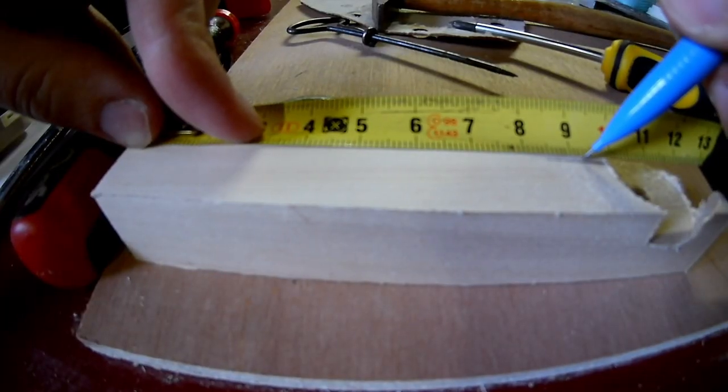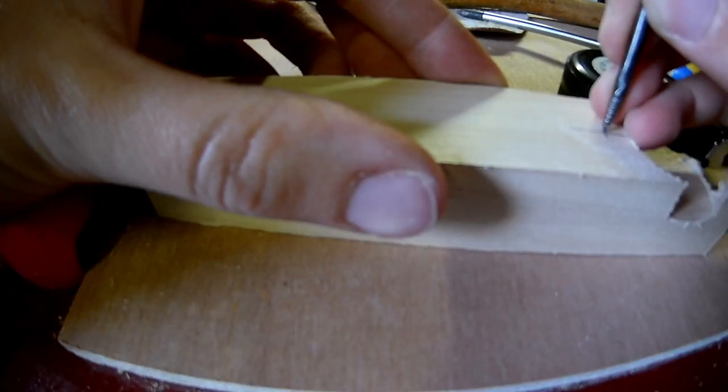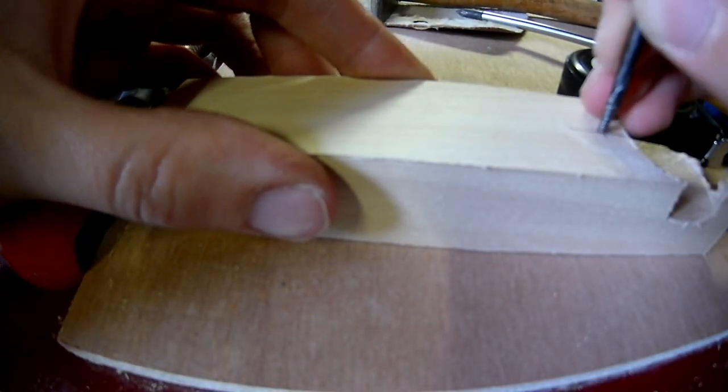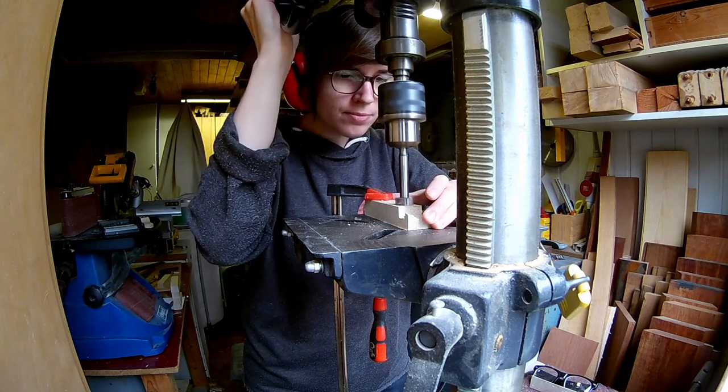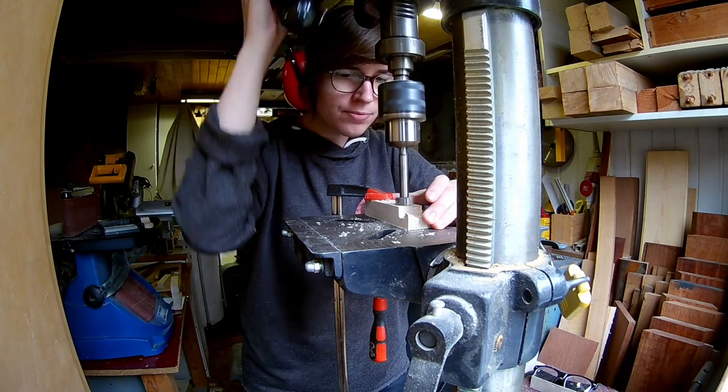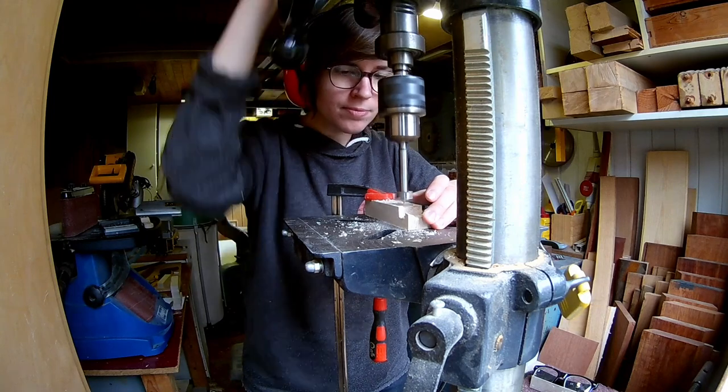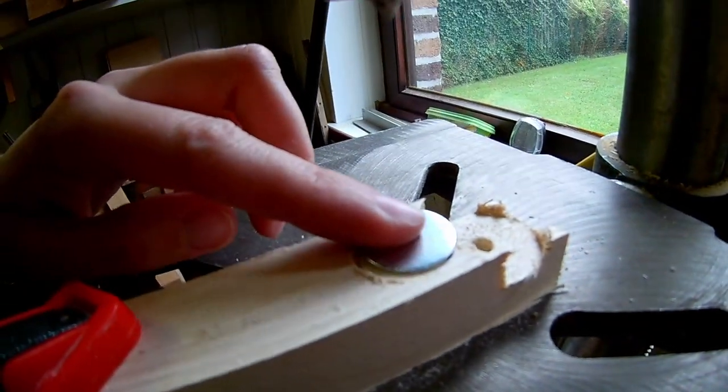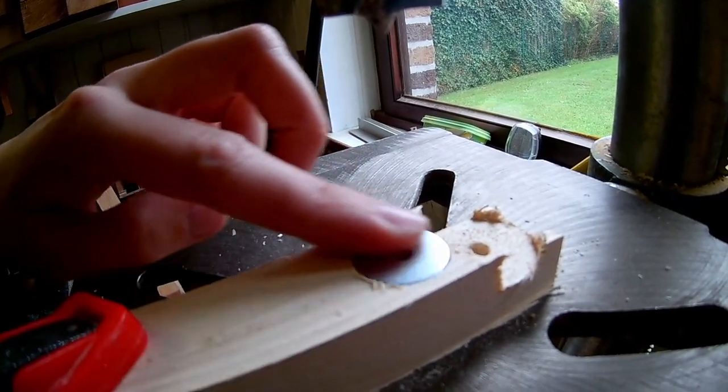Make a mark at 9.2cm. Drill a 20mm hole. Make sure you drill deep enough so the washer sits flat with the wood.